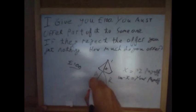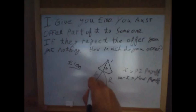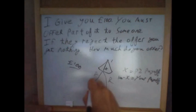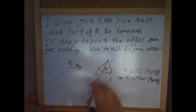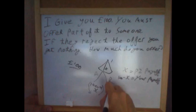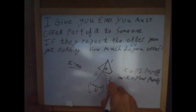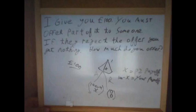If they choose to accept, your payoff is 100 minus x and they receive x. Alternatively, if they reject, then you both receive nothing — you both get zero payoff.